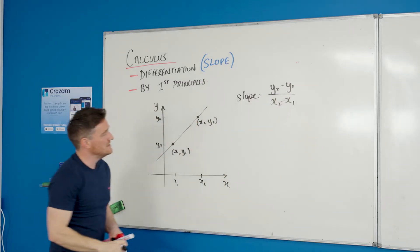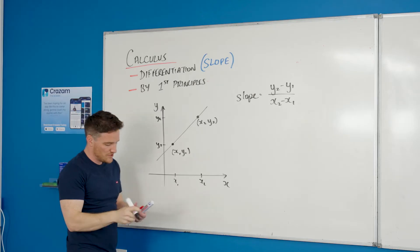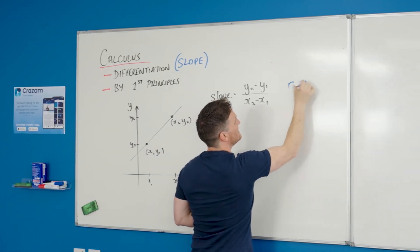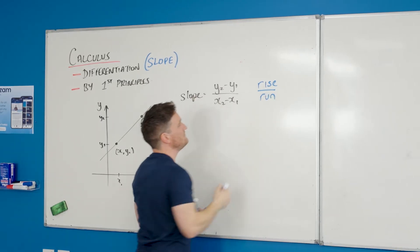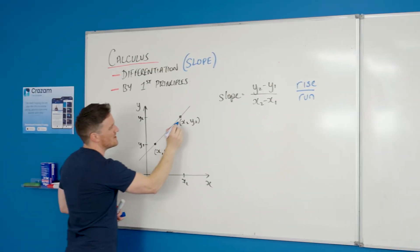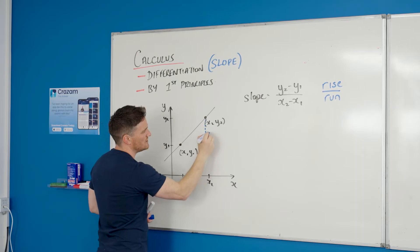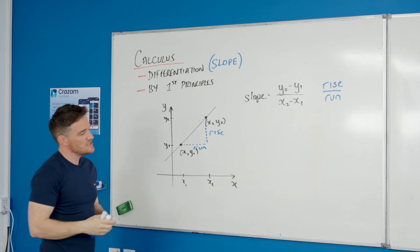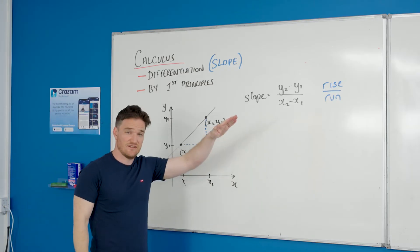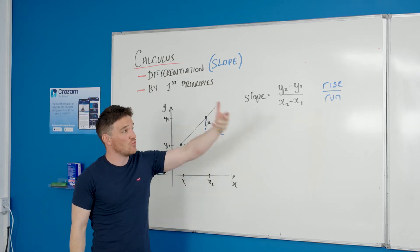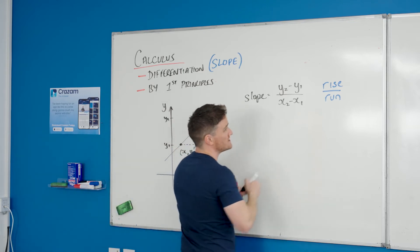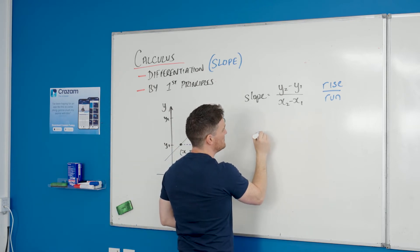Now another way of saying slope that you might also know or have heard your teacher might say is rise over run, where I'm saying that this part here—how much did I go up, my rise—and how much did I go across, my run. So all slope is telling us is really how slanty something is, how much your rise changed with your run.